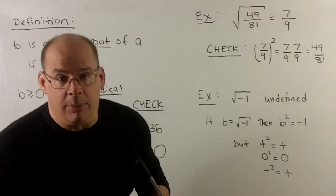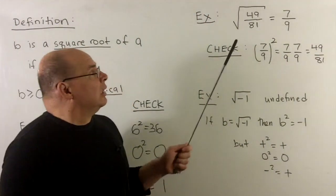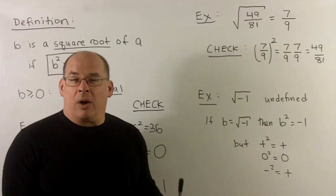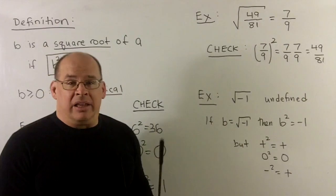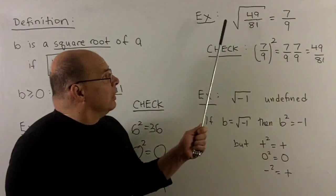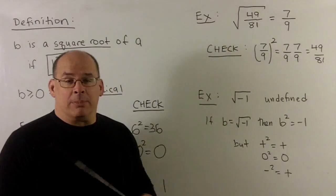For something a little bit more complicated, let's try something like the square root of 49 over 81. Now here, the idea is you just have to think, we've got a fraction. And if I'm squaring,